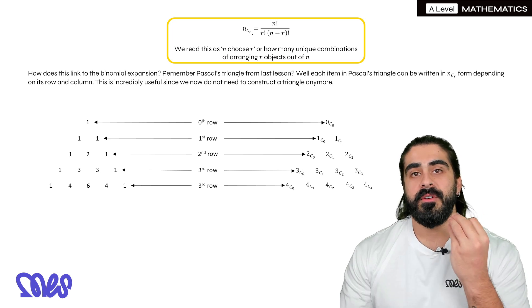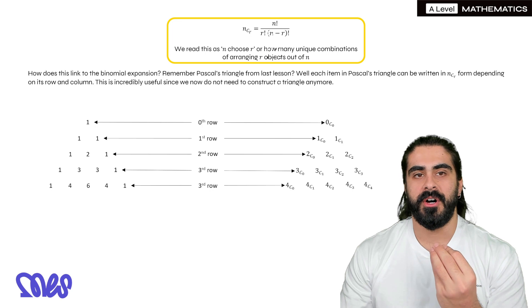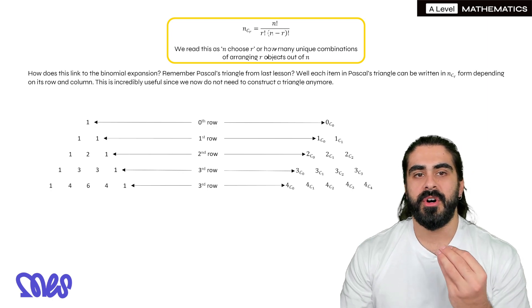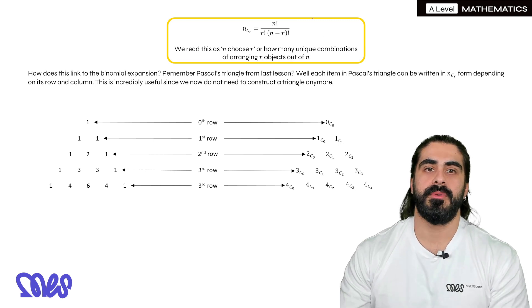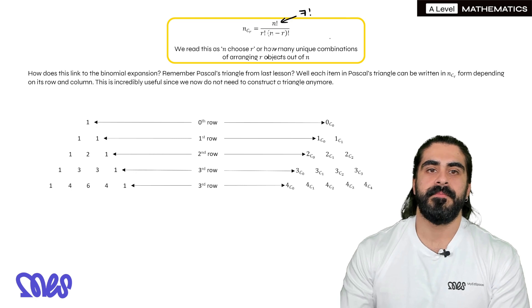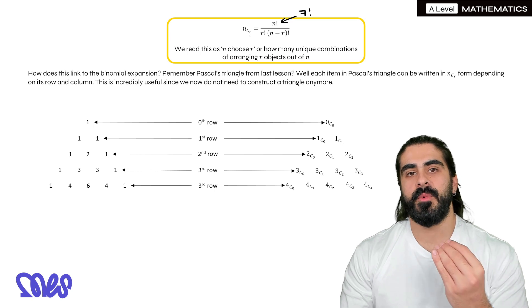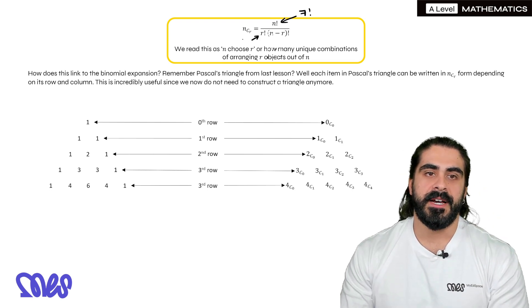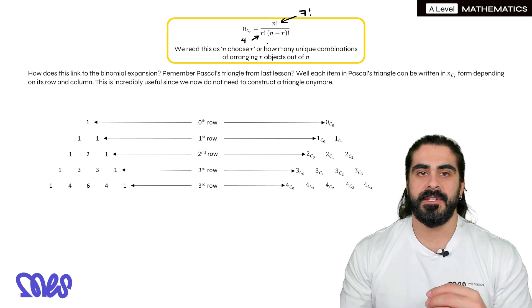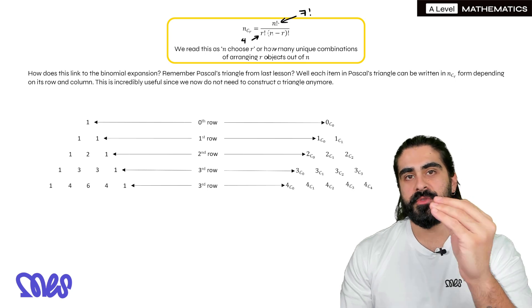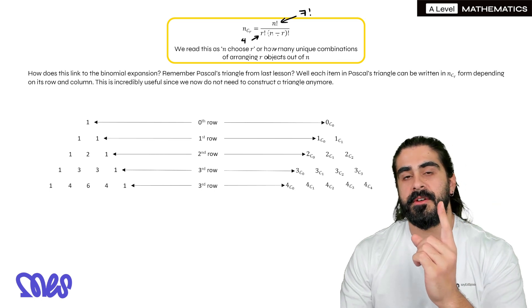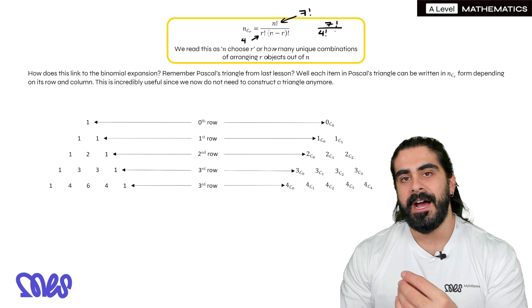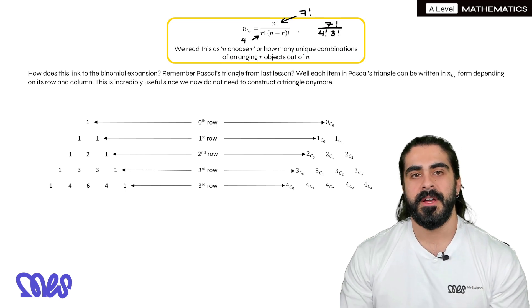So what's the point of all this? Now we have a way of representing what I've just done. We use n choose r. We read this as n choose r, or how many unique combinations of arranging r objects out of n. So in terms of the previous example, on the numerator, we had seven factorial, right? So it was seven objects. And we were asking how many different ways are there of arranging four purple out of seven objects in total. What that means is this last factorial here, if you know how many objects there are in total and how many there are of one type, you immediately know how many of the other type there are by just subtracting.